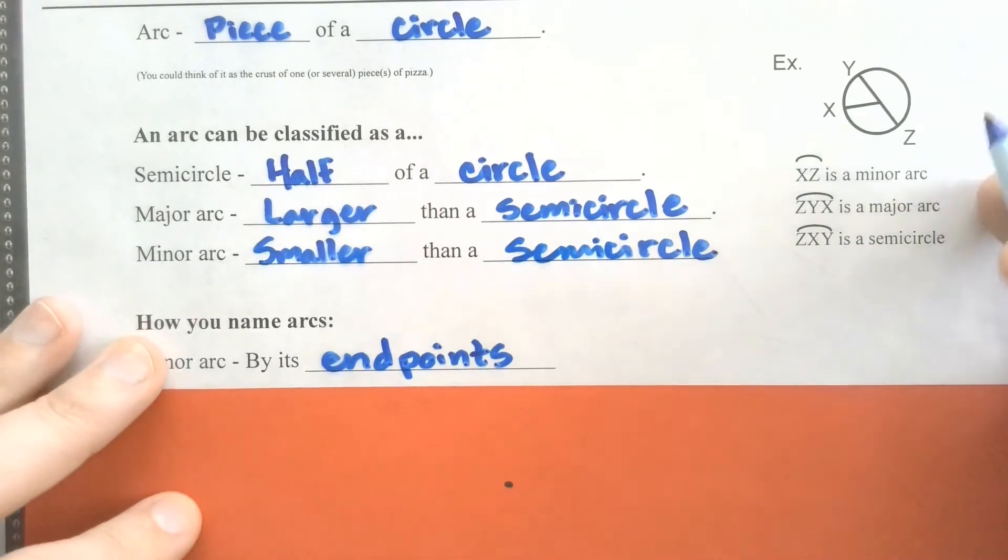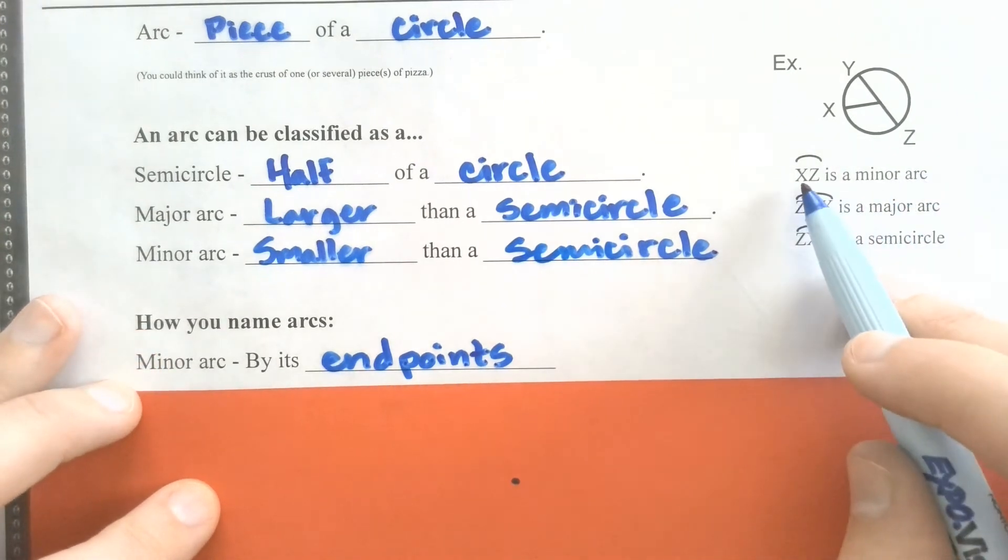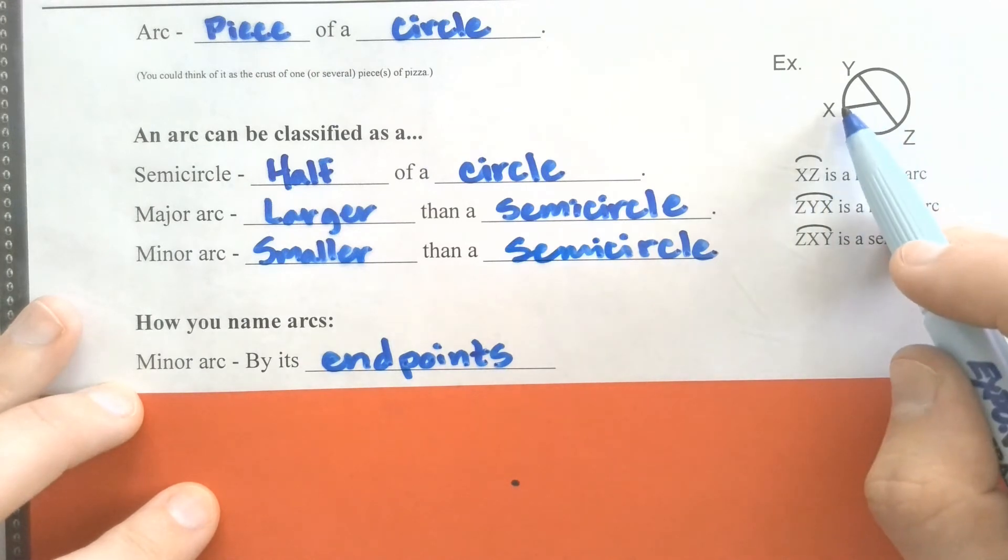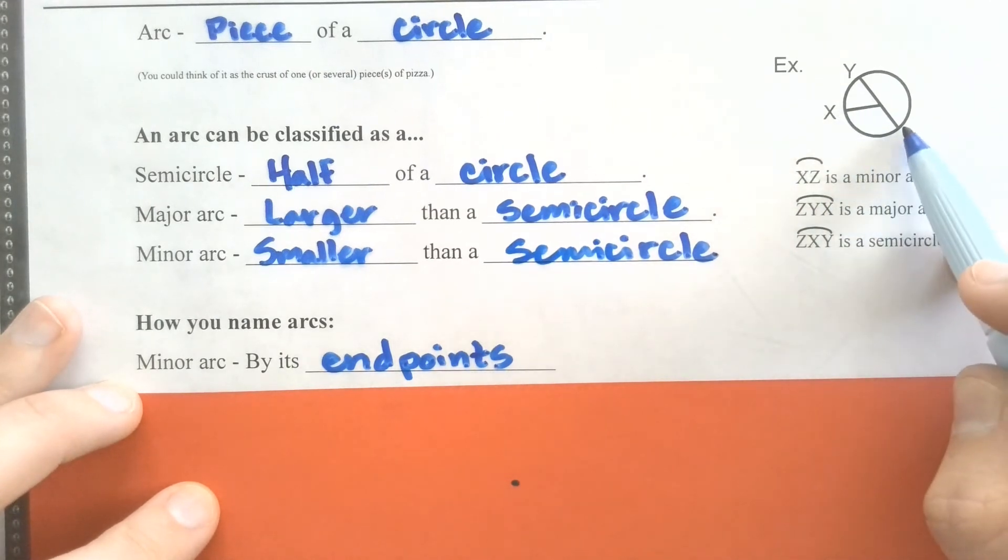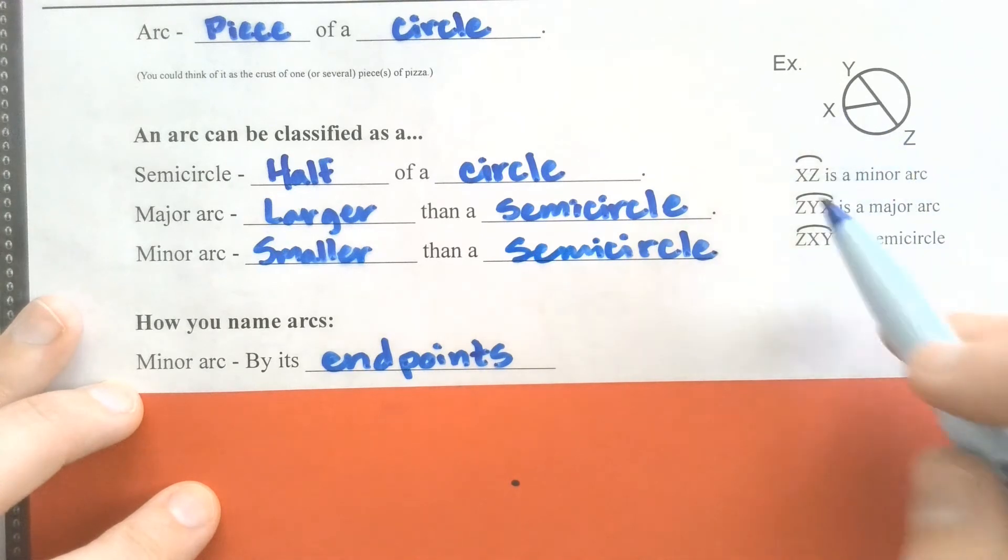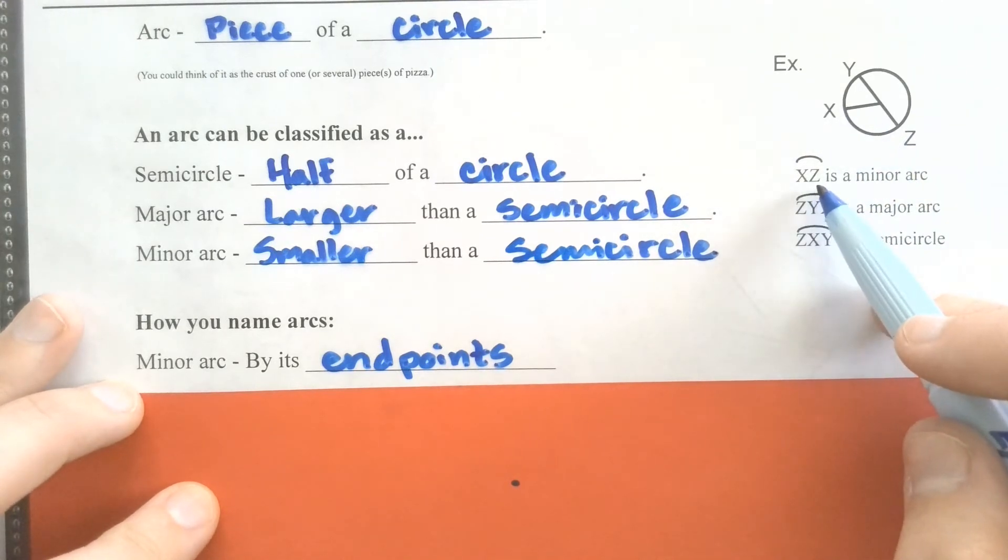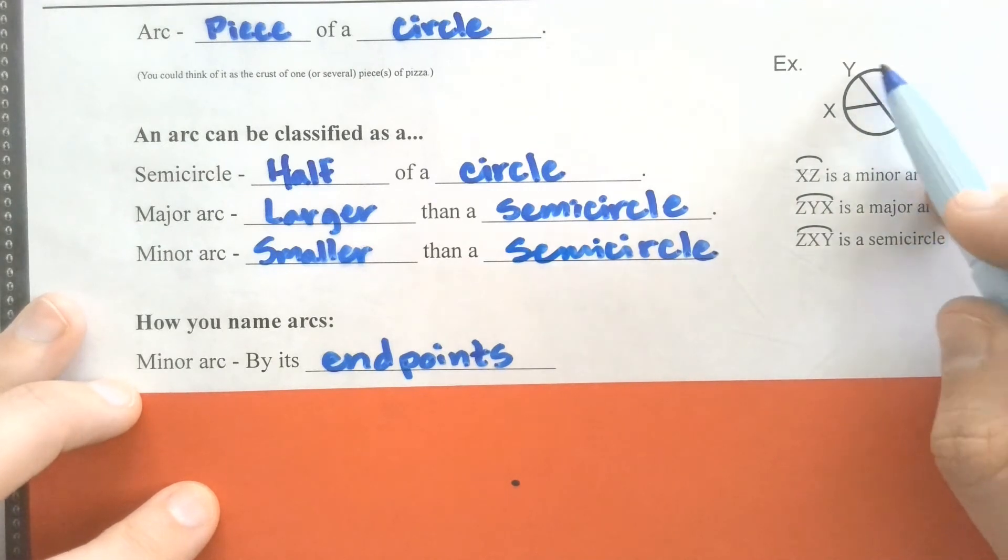For example, up here on the right, XZ, when we say just those two letters, we're talking about the minor arc that goes from X to Z, this arc right here. Now, because they tell me two letters, that's how I know I'm not going to go around it this way and be talking about this big arc, because they only gave me two letters. So I know it's a minor arc, so it's got to be the shortest path from X to Z.